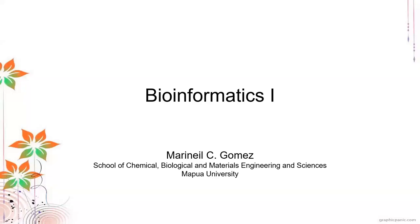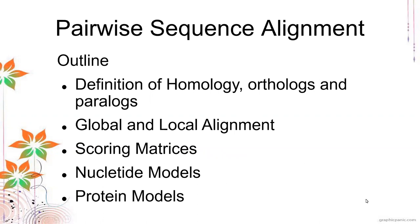Good day. In this lecture, we will be discussing pairwise alignment. The outline for this lecture: we will first look at some definitions, for example homology, orthologs, and paralogs. Then we will look at global and local alignment, and what the difference is between them. After that, we will look at scoring matrices for nucleotides and for proteins.